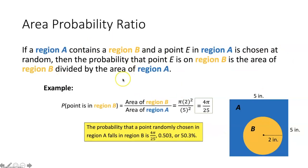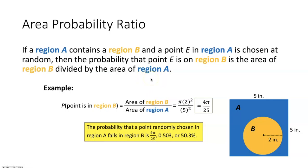The second type of geometric probability is the area probability ratio. This says: if a region A contains a region B, and a point in region A is chosen at random, then the probability that point is in region B is the area of region B divided by the area of region A. This is very similar to the length probability ratio — instead of working in one dimension, we're working in two dimensions, using the area of geometric figures.